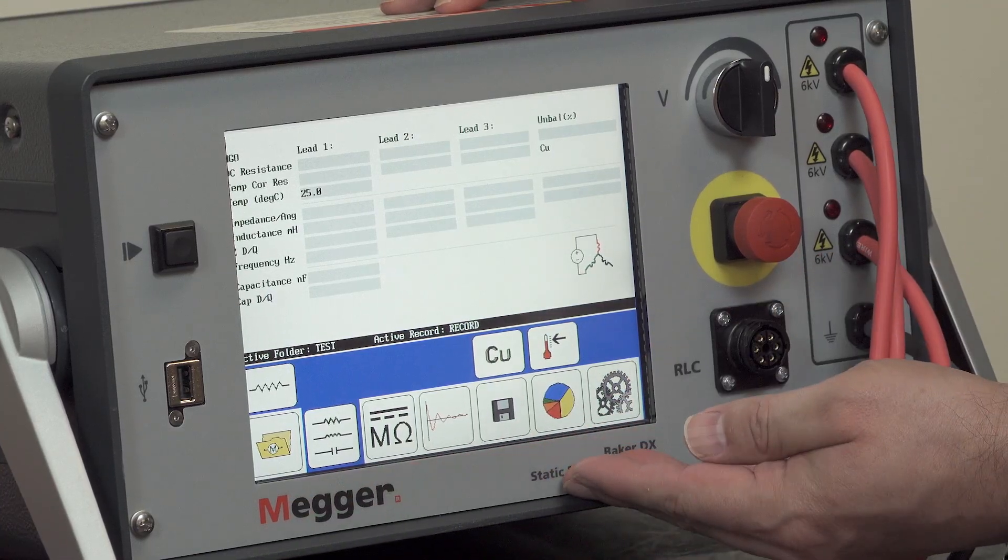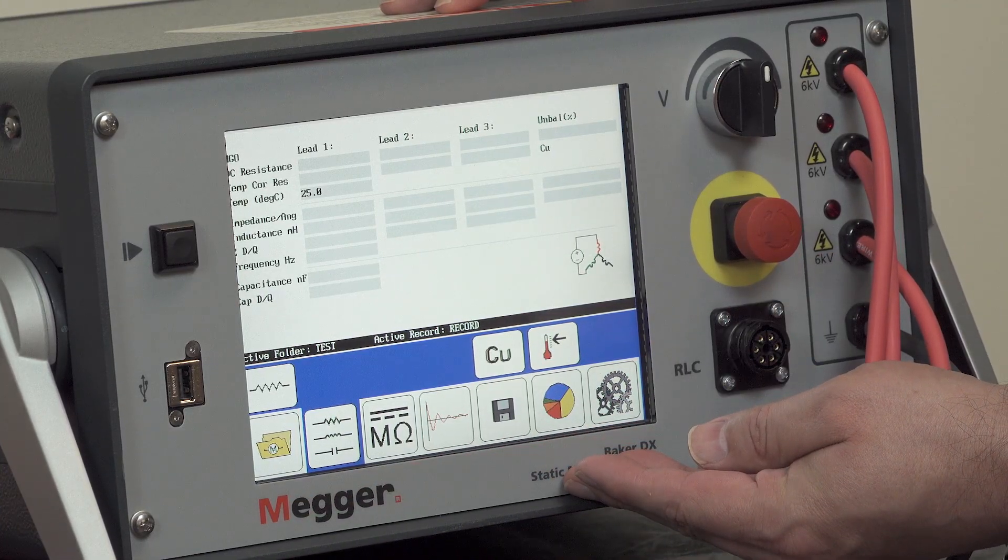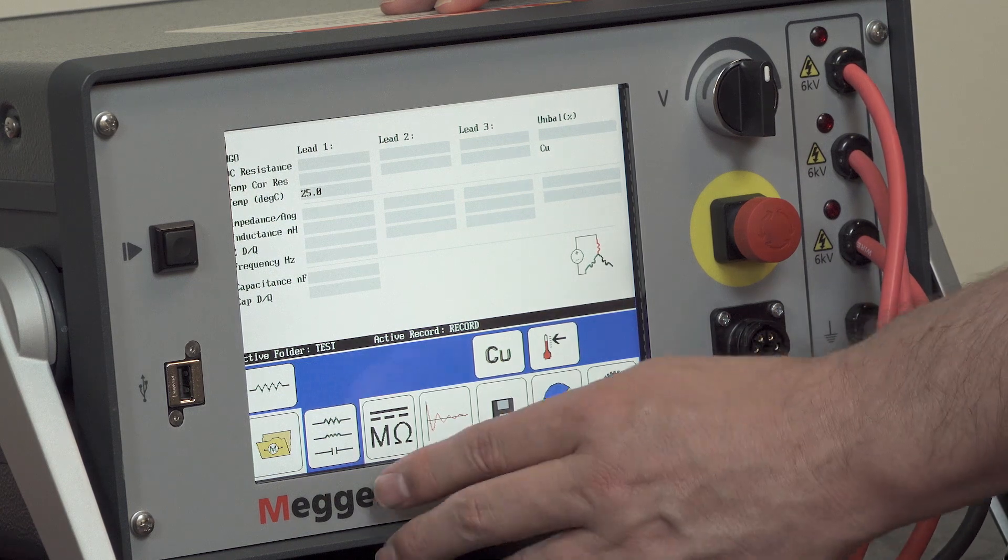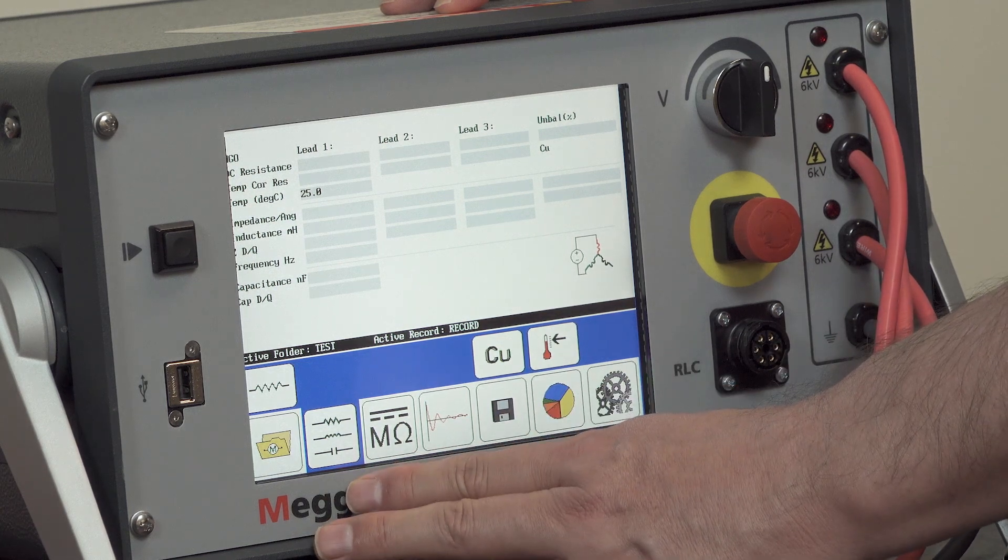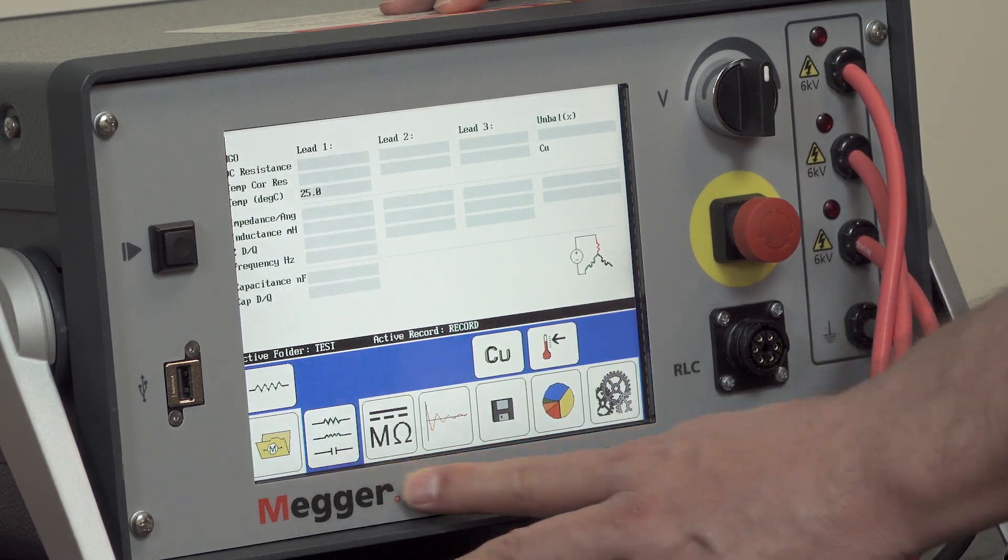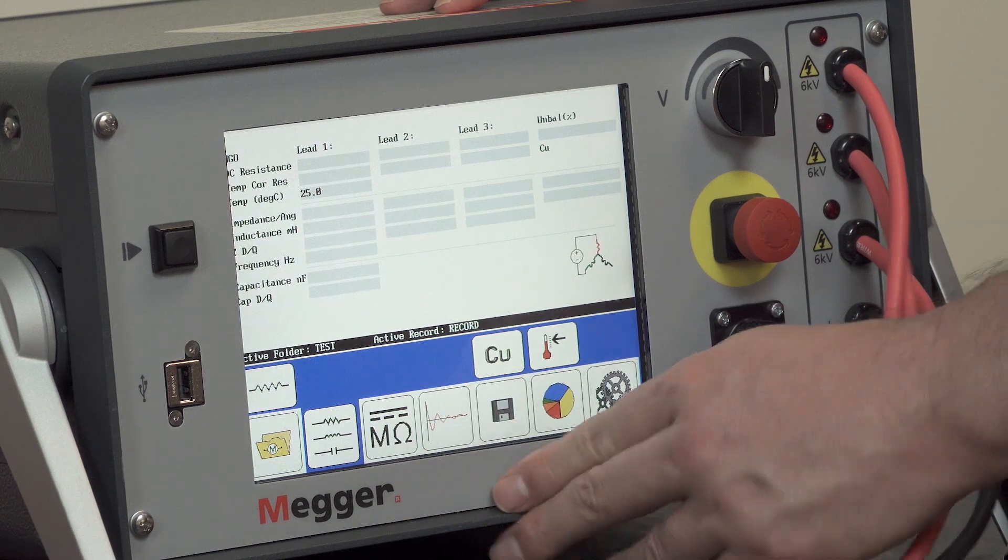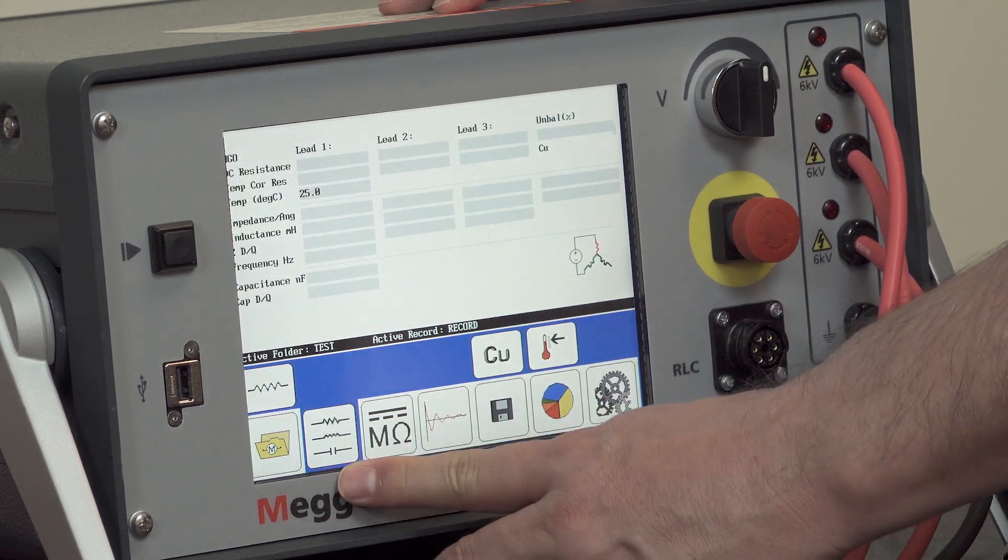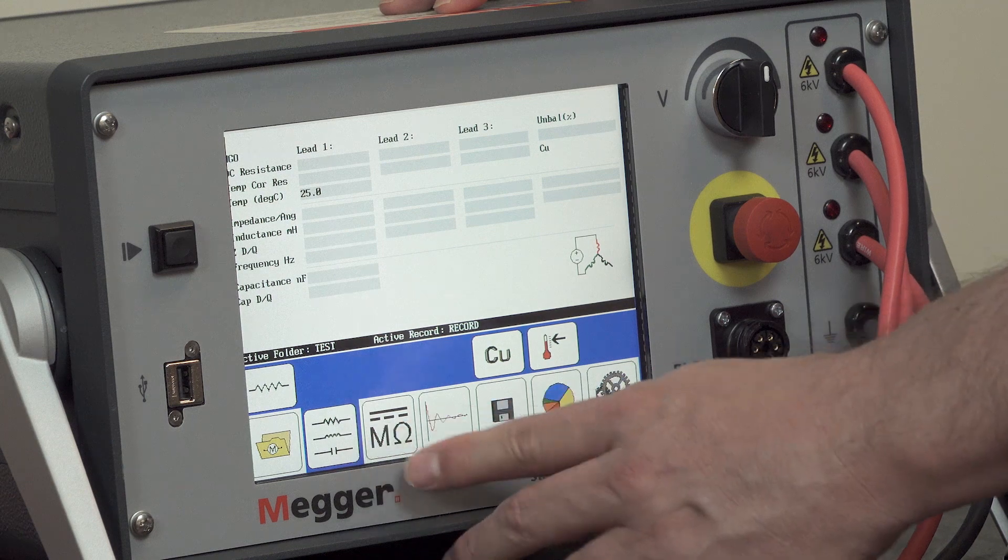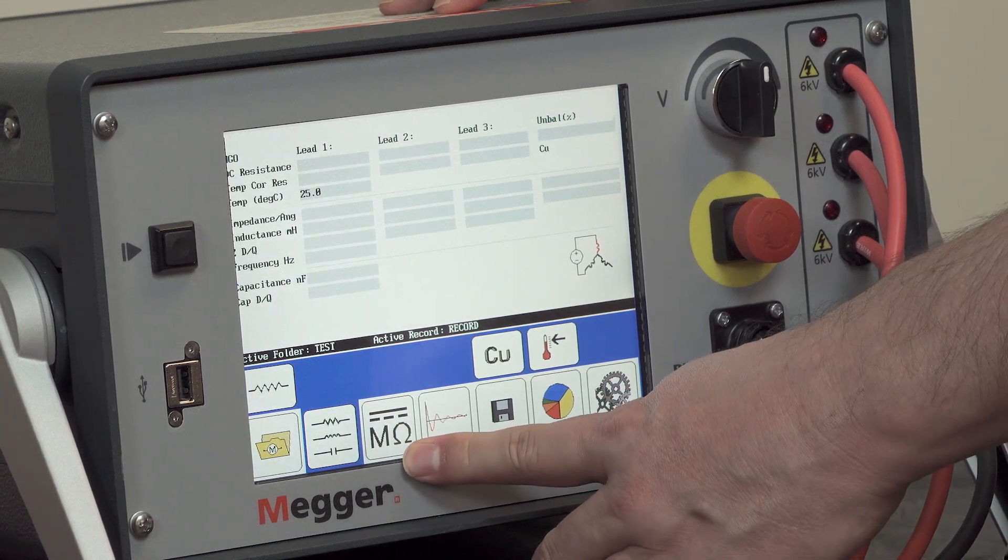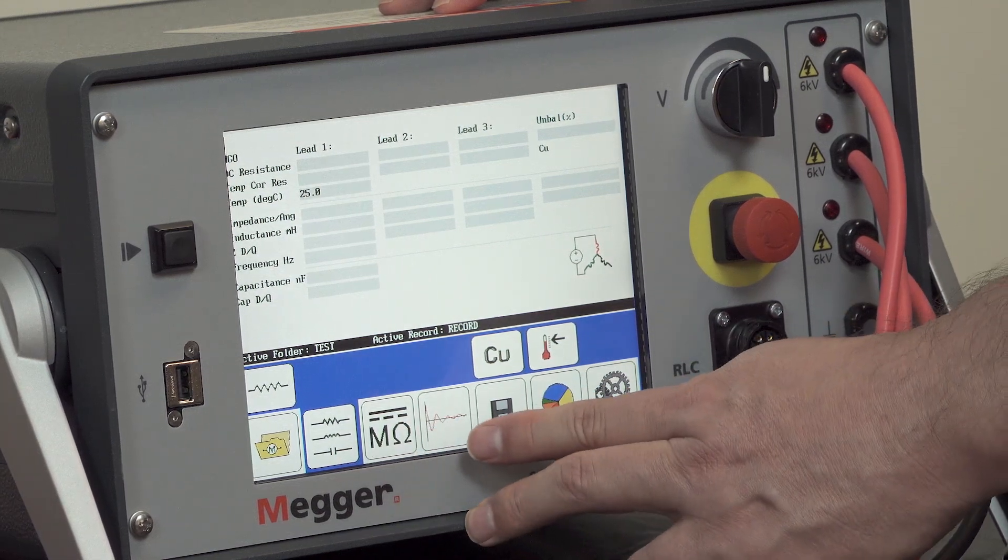The icons are arranged along the bottom for selecting the different functions of the tester. The main static tests are organized from left to right as a normal test would be performed. First the RLC, then the DC testing both low voltage and high voltage, and then finally the surge test.